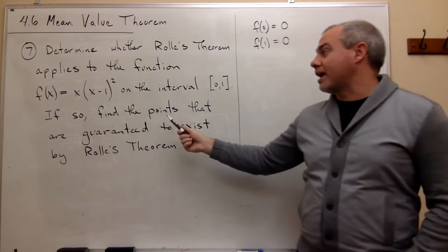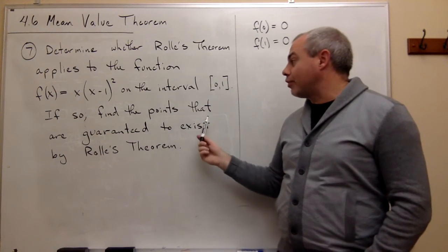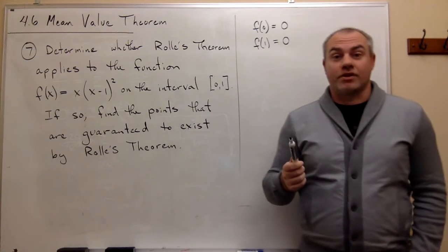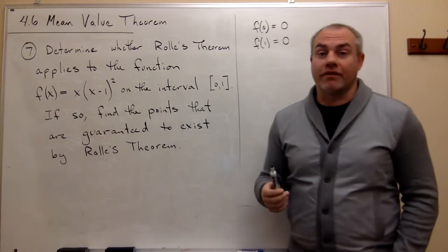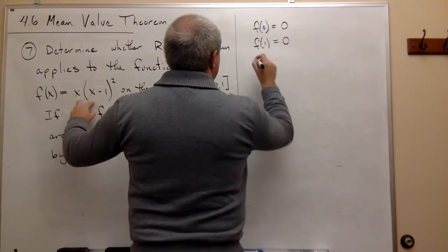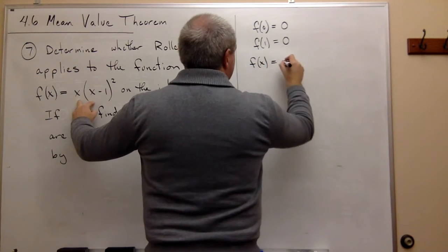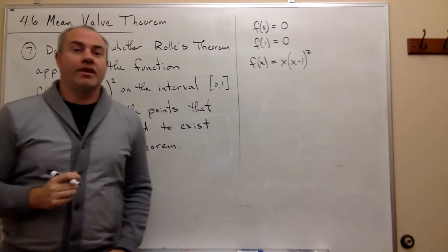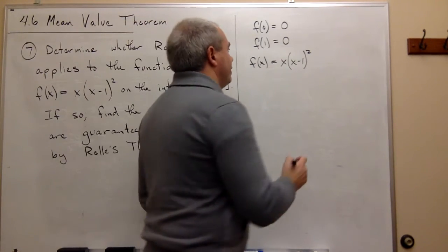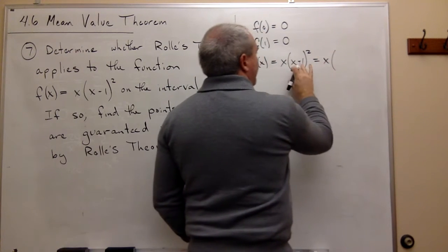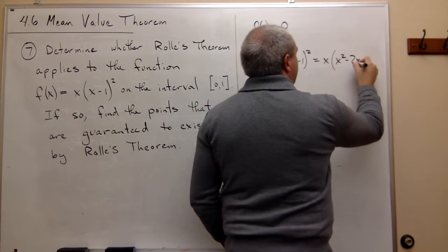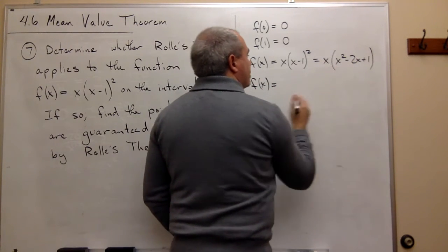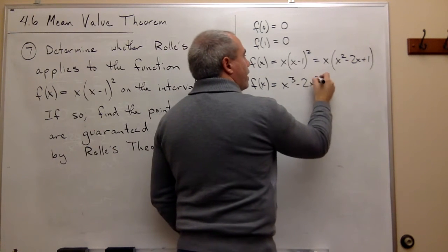And so what this problem asks us to do is find the points that are guaranteed to exist by Rolle's theorem. So there is at least one point in between 0 and 1 where the derivative is 0, and can I find it, and possibly any more if they exist? So the first thing I want to do is let's rewrite the function here. So f(x) is equal to x times (x-1)². And I'd like to take the derivative of that, but before I do, let's multiply it out a little bit. So this is equal to x times, if I square x minus 1, I get x² - 2x + 1. And then I could rewrite f(x) as x³ - 2x² + x.